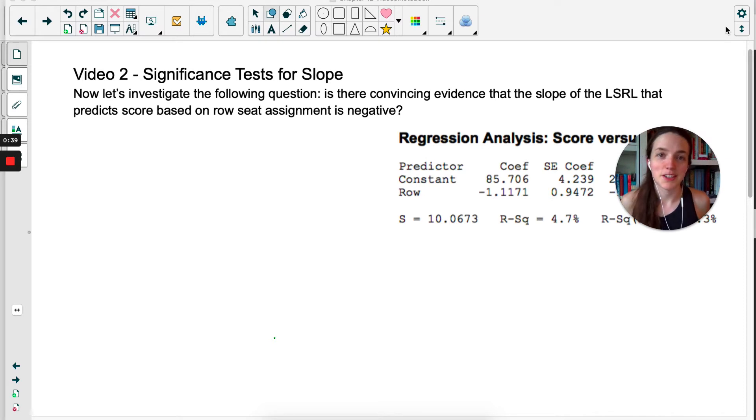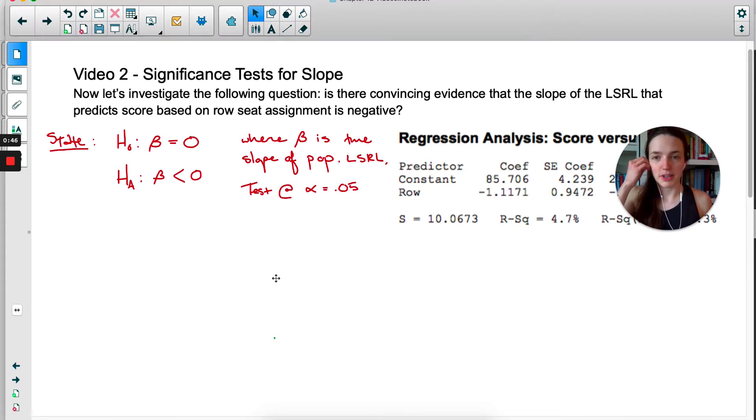We're going to do the four-step process. Let's start with state. Our null is going to be that beta equals zero. Remember that beta is the slope from the population, so the true slope.